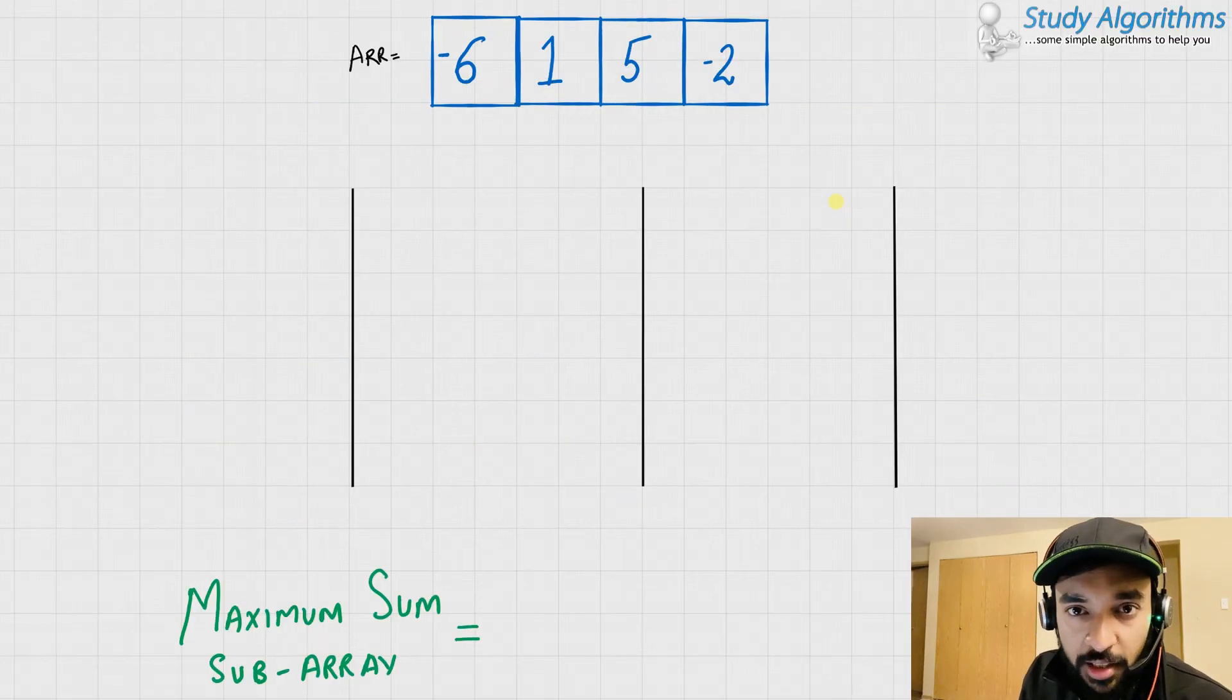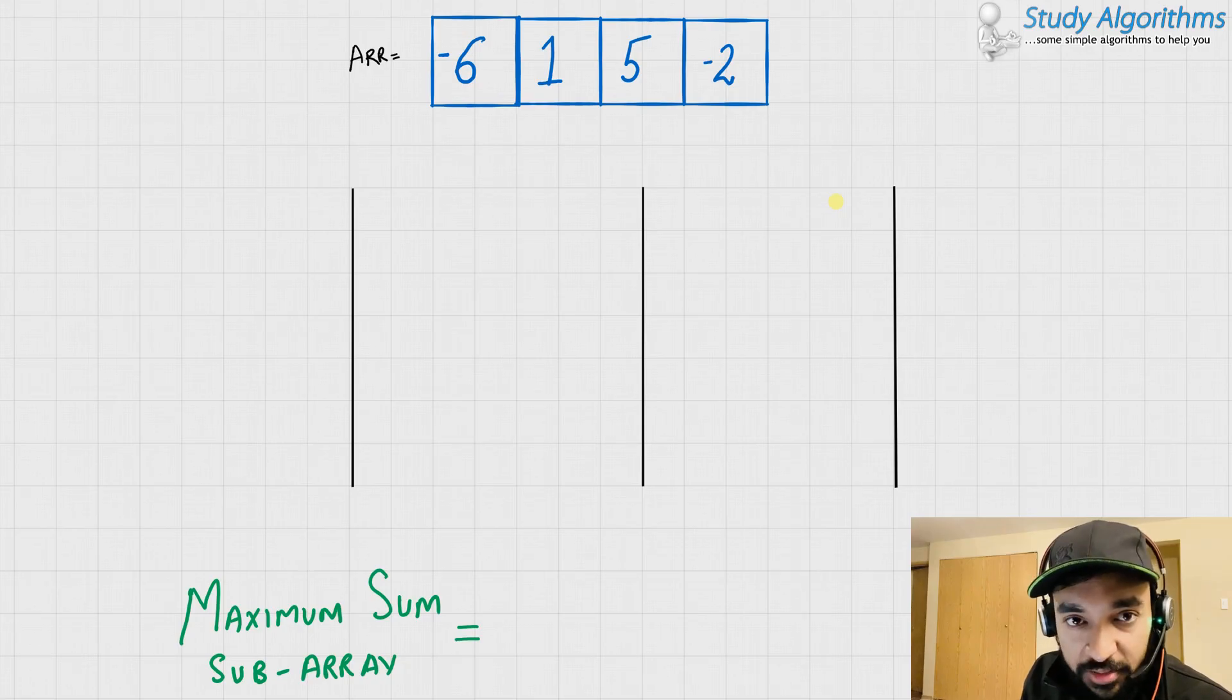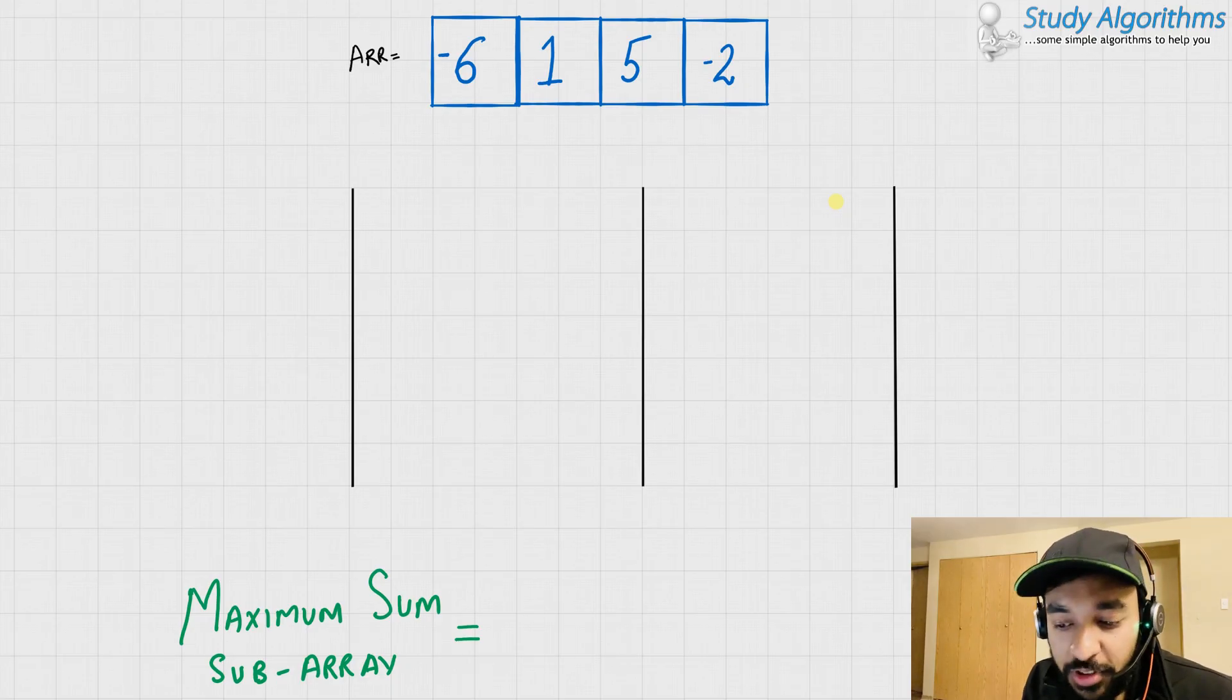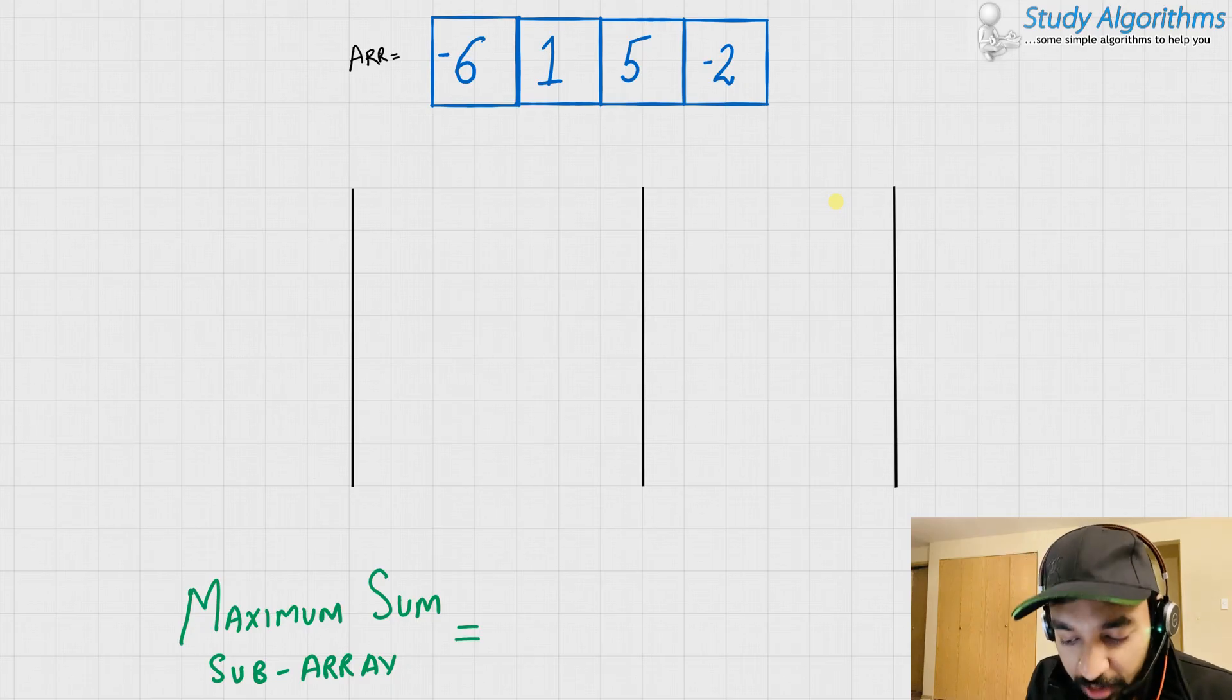As a good practice, we would first try to solve the problem and then we would try to optimize it. So, a nice approach to solve this problem would be to find out all the possible contiguous subarrays, find out their sum, and see which contiguous subarray has the maximum sum. Let us try to see what could happen if we try to go with this approach.